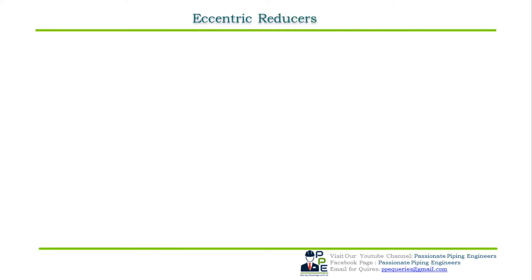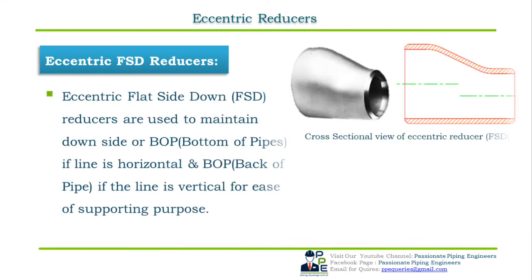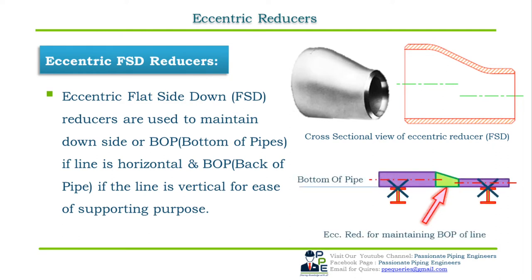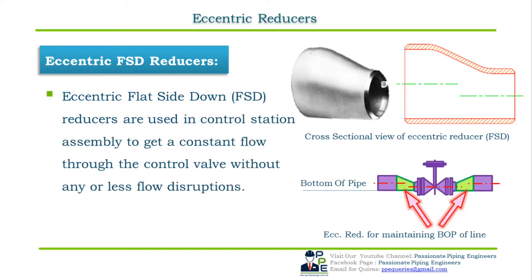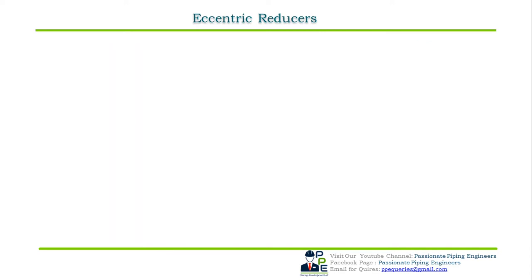Eccentric flat side down (FSD) reducers are used to maintain the downside or BOP (bottom of pipe) if the line is horizontal, and back of pipe (BOP) if the line is vertical, for ease of supporting. As seen in the figure, the bottom of the pipe is maintained for supporting purposes. Flat side down reducers are also used in control stations to get a constant flow through a control valve with minimal flow disturbance.